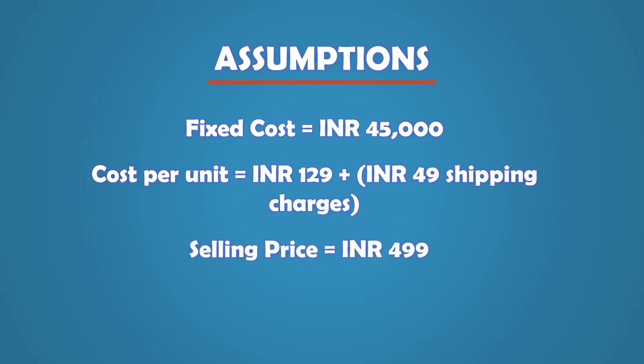The company intends to start with a selling price of 499 Indian rupees. The cost per lead, when running a marketing campaign on whichever channel they use — whether Facebook or Google — has historically been 11 rupees. So the assumptions are: 45,000 fixed cost, cost per unit 129 plus 49, selling price 499, and cost per lead 11 rupees.